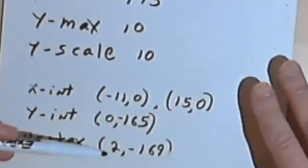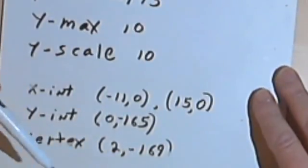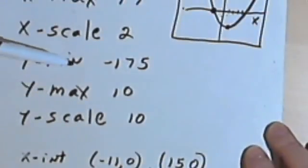And on your y-axis, you want to include the vertex, if it's an upward opening parabola, then the vertex will be the lowest point on your graph, so that would be your y-min.